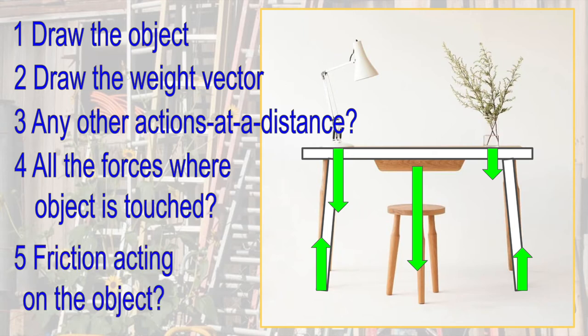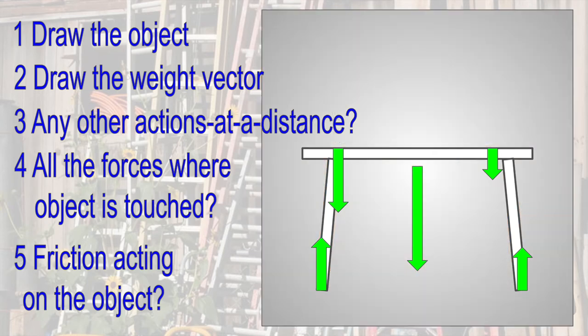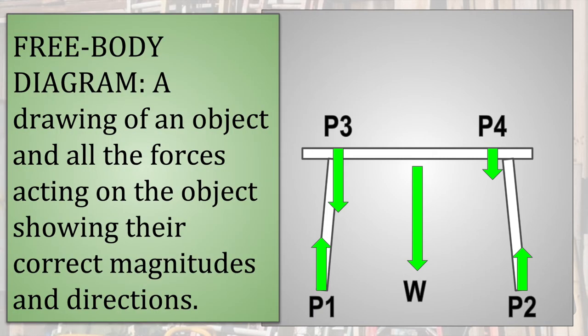Lastly, friction acting on the table. There is no motion in this situation, and the surfaces are horizontal, so there are no frictional forces acting on the table. So here is the free body diagram of the table, showing all of the forces that act on the table. It is helpful to label them with letters or words, like this. Here is the free body diagram of all of the forces acting on the table with their correct directions and relative sizes.